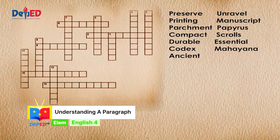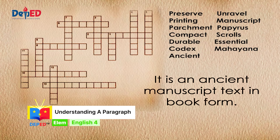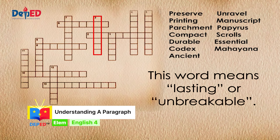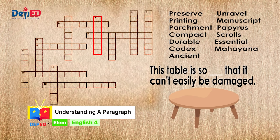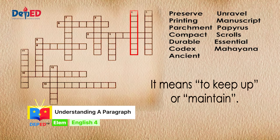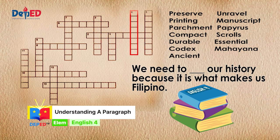Let's start with down. Item number one, five letters: it is an ancient manuscript text in book form. My grandmother owns a... that she likes to read. Number three, seven letters: this word means lasting or unbreakable. This table is so durable that it can't easily be damaged. Number four, eight letters: it means to keep up or maintain. We need to preserve our history because it is what makes us Filipinos.